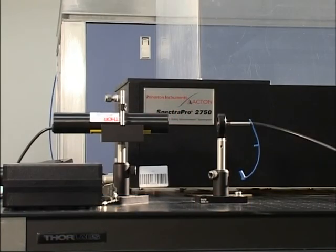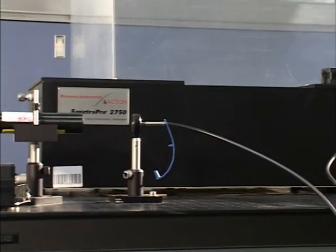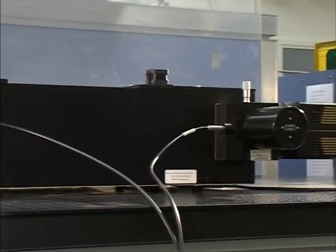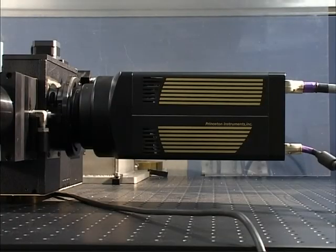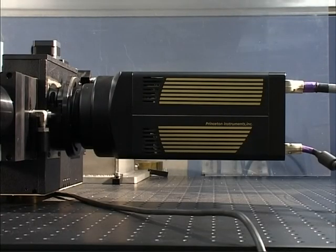For a radiation experiment, we use an Acton SpectraPro spectrometer and a VUV enhanced CCD camera to measure both the radial temperature distribution of the plasma and the radiation emitted by the plasma in the vacuum ultraviolet.